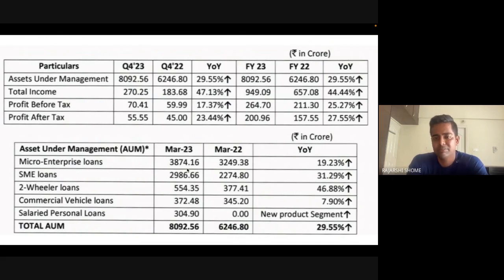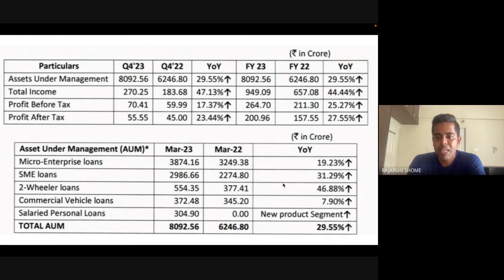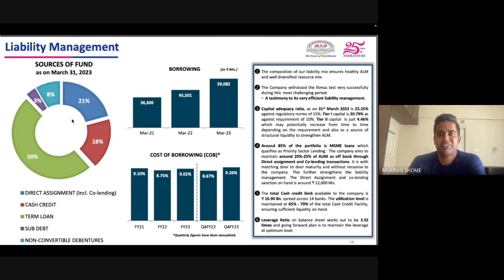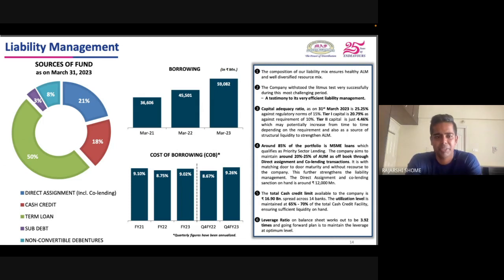Two-wheeler loans grew 46 percent, but that's off a very low base — it doesn't mean the two-wheeler segment is doing well. Looking at the cost of borrowing for Mass: it's around 9 to 9.5 percent. Since they don't have a CASA franchise like banks, they raise money through term loans from banks, bonds or NCDs, and direct assignments including co-lending and securitization. Co-lending is a partnership where NBFCs bring geographical scale and banks bring large capital — a marriage of capital and scale.